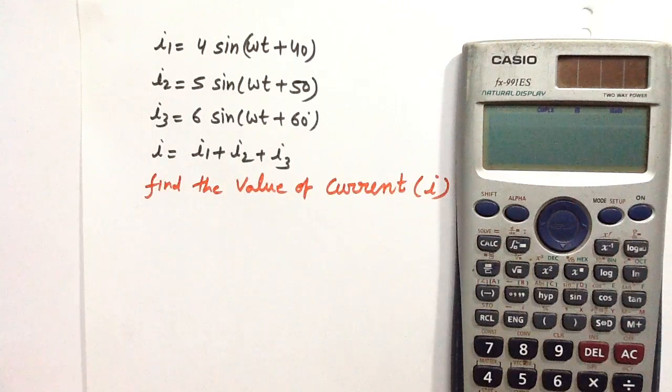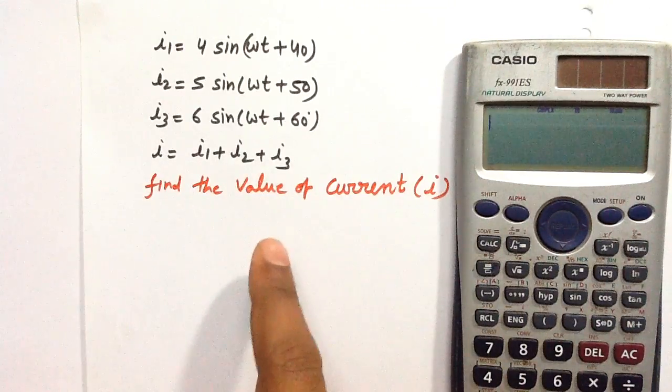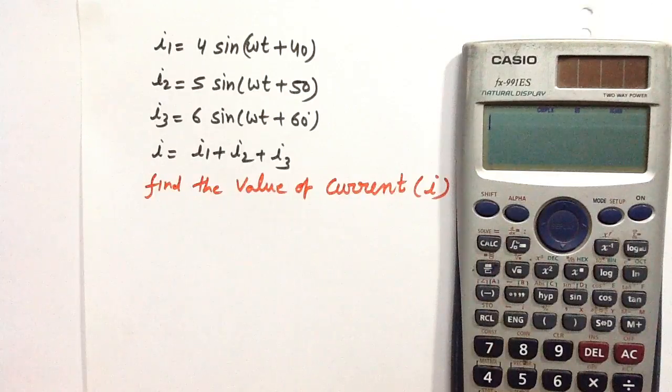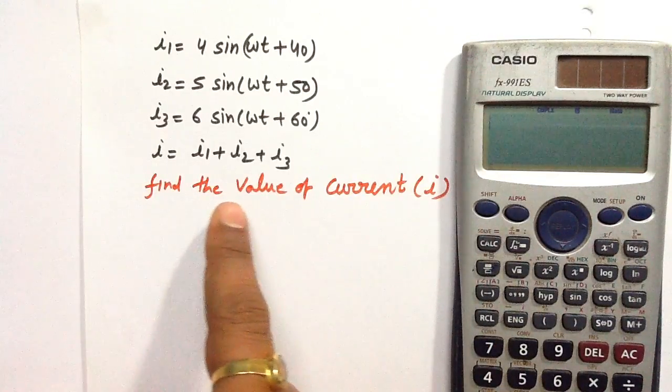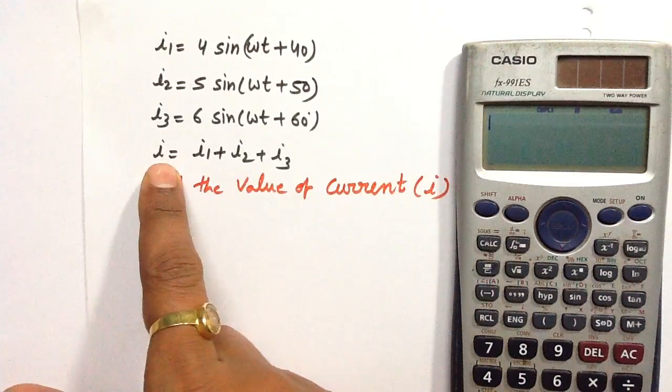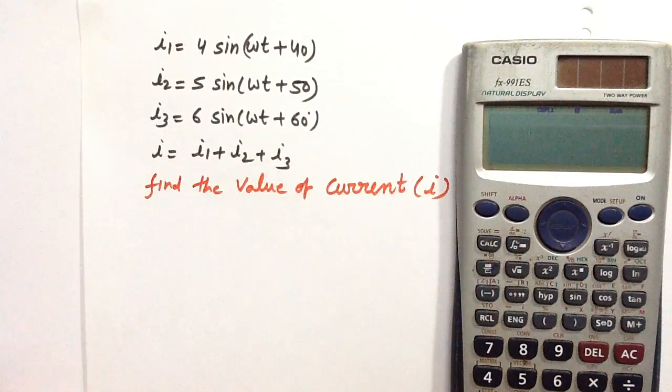In this video I'll show you how to solve this problem using the Casio FX991ES calculator. We need to find the value of current i, which is defined as i = i1 + i2 + i3.